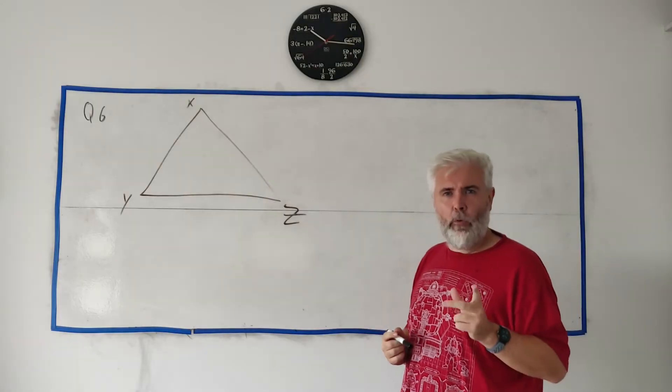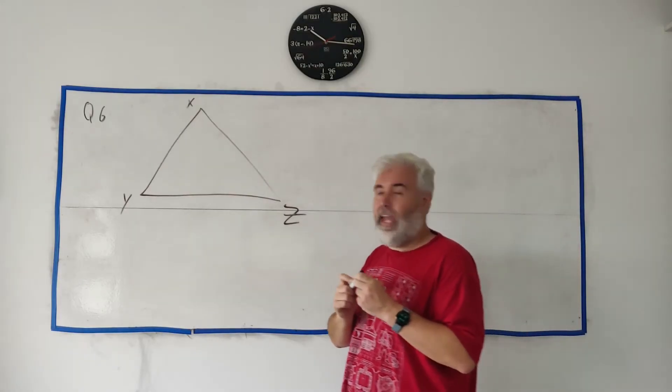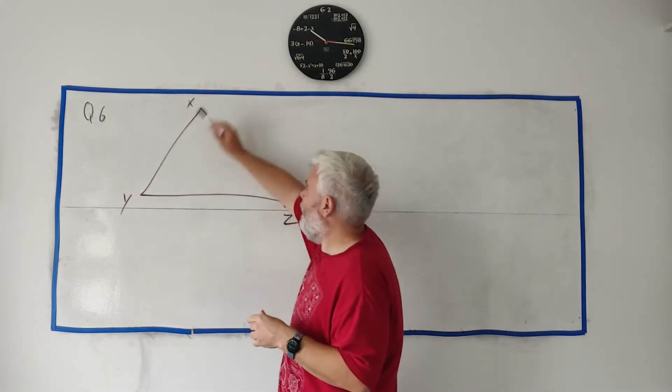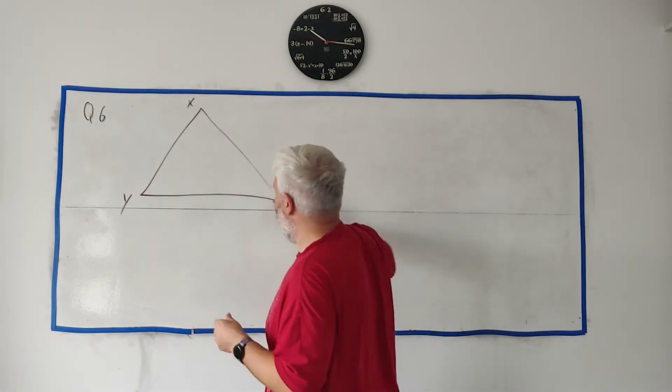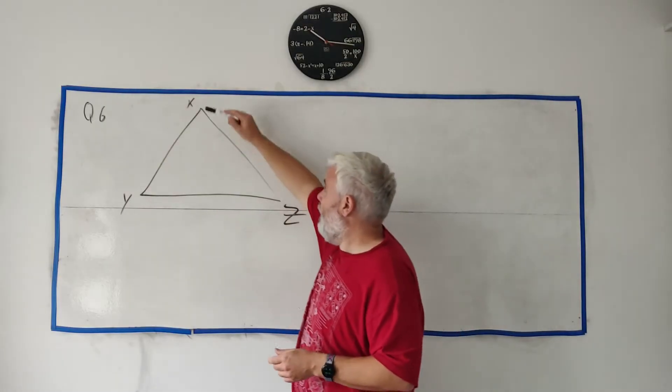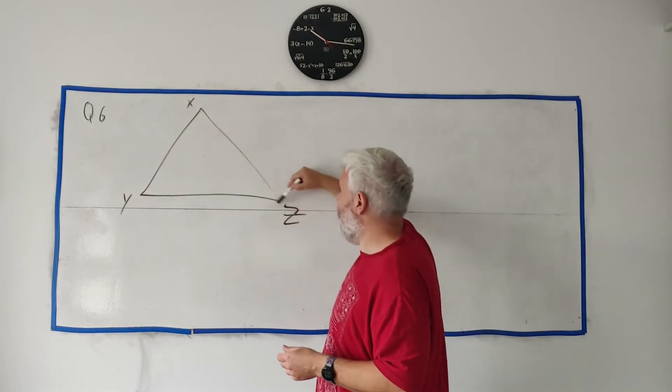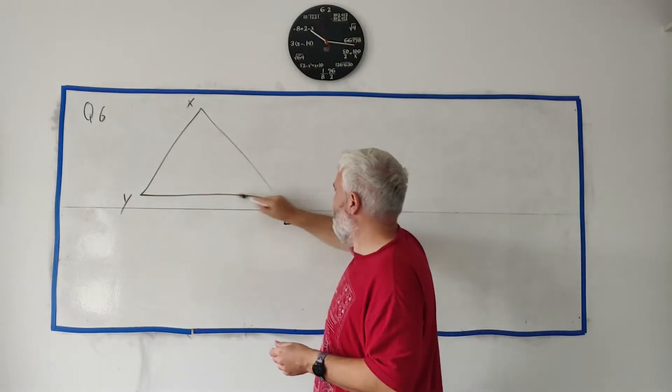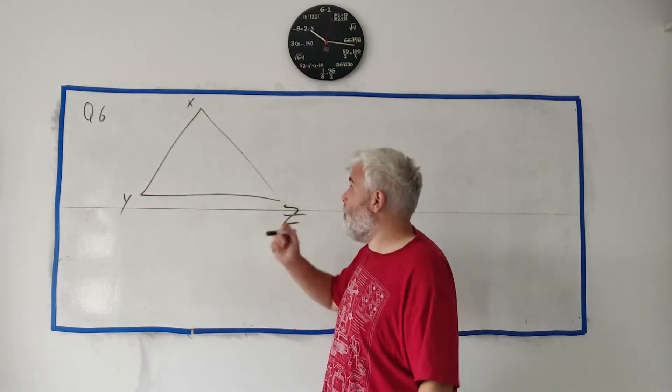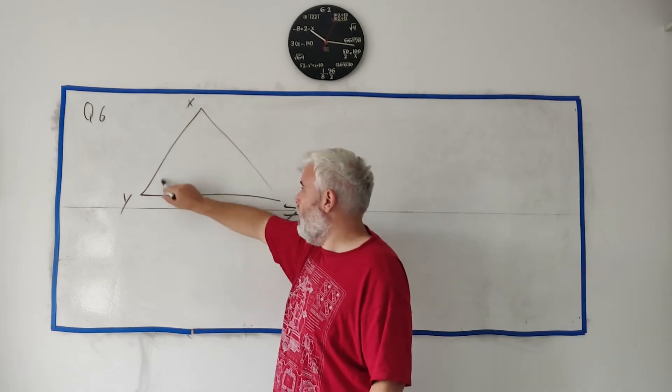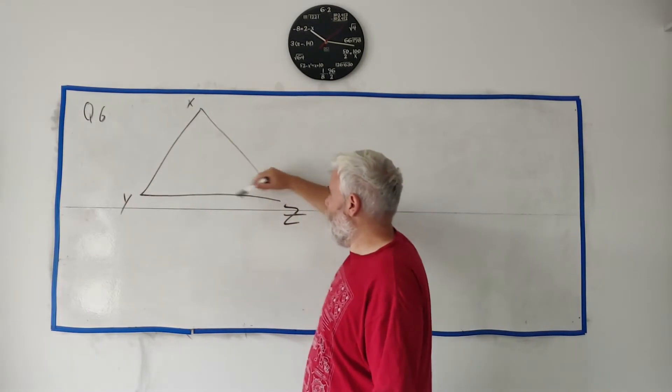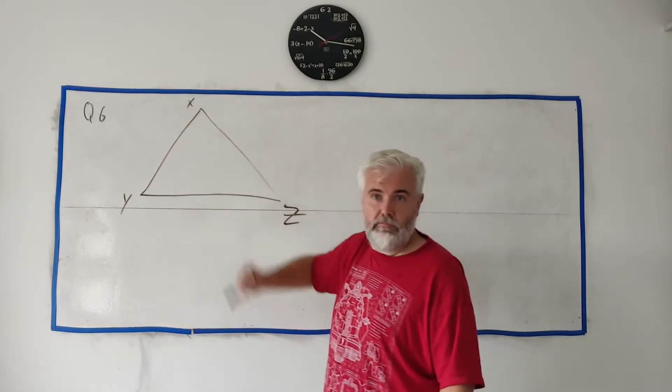Let me go over which angle it was again, they said angle XYZ. Remember that's important how they say it - angle XYZ means it's this angle in here. If they said angle XZY that'd be in here, so the middle letter tells you the angle.